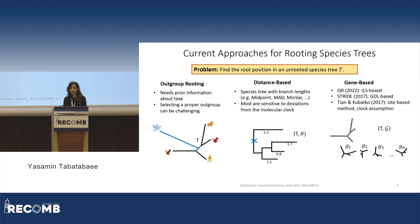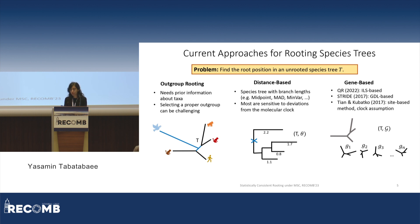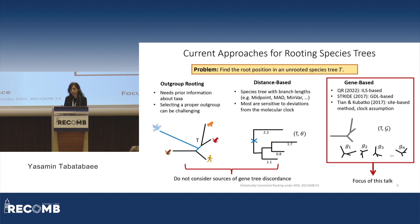There are different approaches that can be used for this problem. A traditional method is outgroup rooting, where a species known to be evolutionarily distant from the taxa in the input set is added, a species tree is estimated on this expanded set, and the edge dividing the in-group and out-group determines the root position. A second group are distance-based methods that use branch lengths to find the root based on a specific optimization criterion, but many are sensitive to deviations from the molecular clock. The third group are gene-based methods that use discordance between gene trees and species trees to identify the root position, and this talk focuses on that third group — specifically rooting in the presence of ILS.